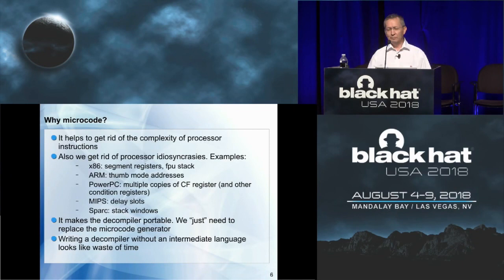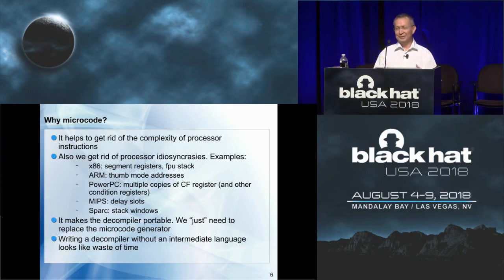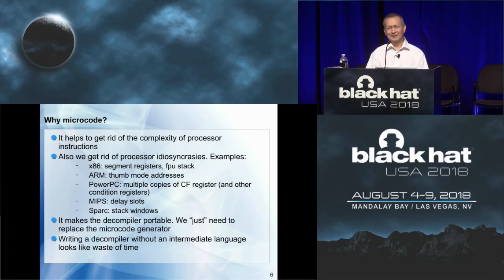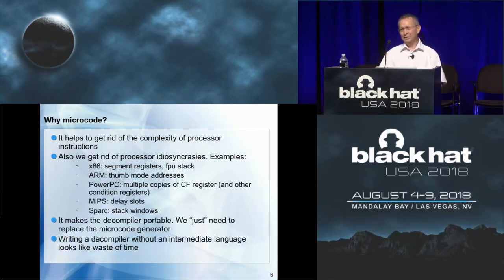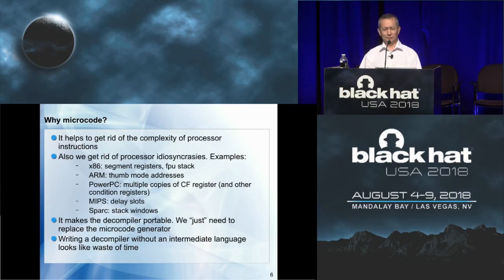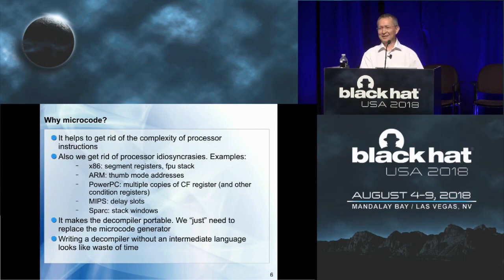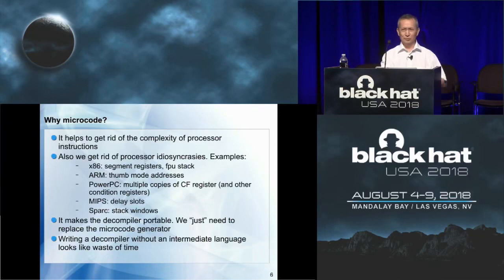The microcode makes the decompiler portable. We just need to replace the microcode generator to get a decompiler for a new processor — though the devil is in the details. A decompiler without an intermediate language is a waste of time, because once you finish your decompiler for one processor, you would have to redo everything for another. And we don't want to support only one processor, since there are many popular ones.